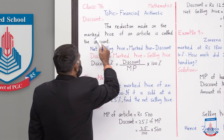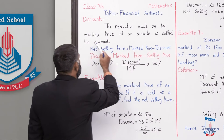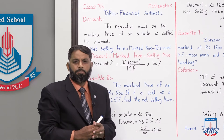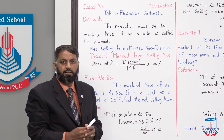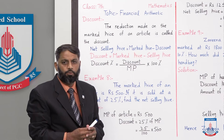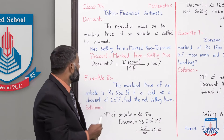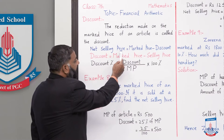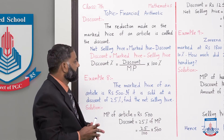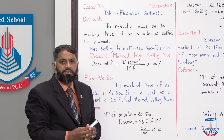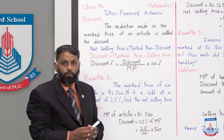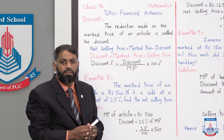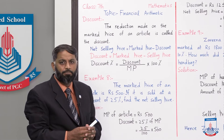The reduction made on the marked price of an article is called the discount. Marked price वो होती है जो किसी भी article पे print होती है। उस marked price में जो price reduce की जाती है उसे हम discount कहते हैं। Net selling price का formula: Marked Price minus Discount = Selling Price। Selling price वो होती है जिस price पे कोई भी article sale किया जाता है।